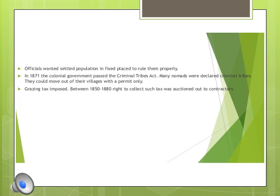In 1877, the colonial government passed a tribal act imposing restrictions on the movement of tribal people from one place to another. Those found moving without permission were arrested under the Criminal Tribal Act and strict actions were taken. They could not move out of their villages without permission from the British. A grazing tax was also imposed — if pastoralists were given permission to graze their animals on certain grass, they had to pay tax for it. Between 1850 and 1880, the right to collect such tax was auctioned out to contractors.